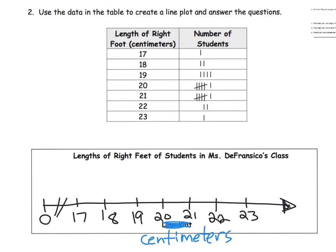Now we're ready to start making X's for all of our data. We have one person who measured 17 centimeters, two people who measured 18, and four people who measured 19.